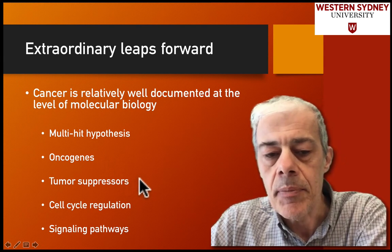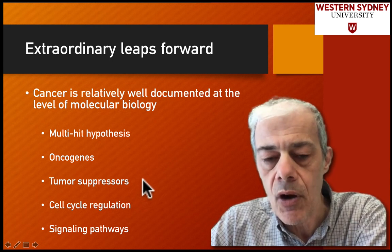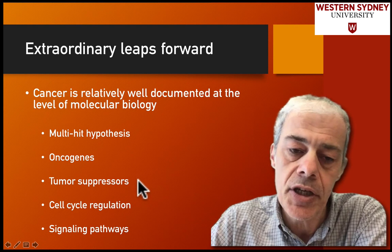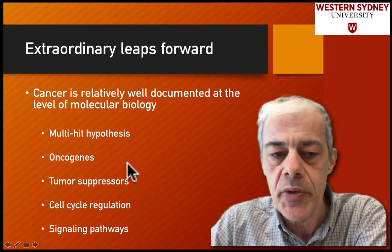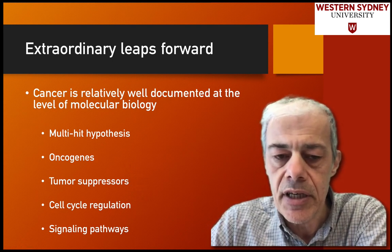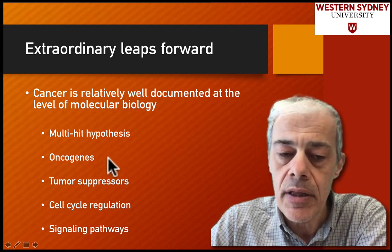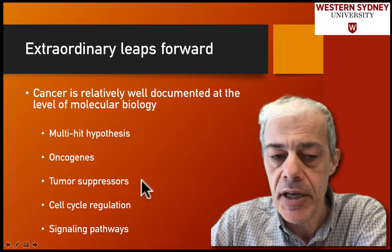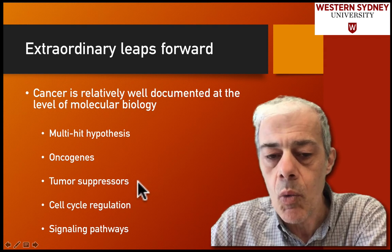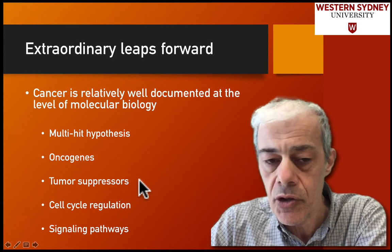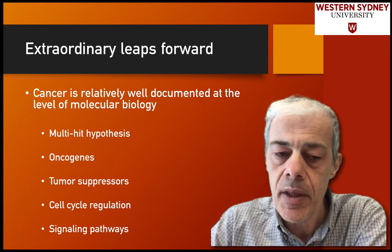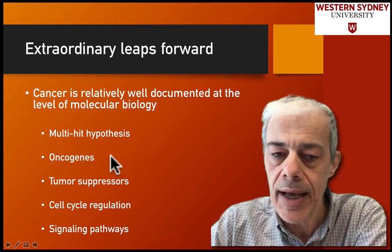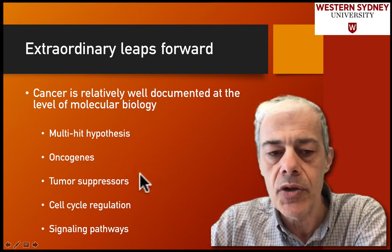With tumor suppressors, because it's a loss of function, you need to lose both copies of the gene — knocking out both alleles. We talked about this process of loss of heterozygosity in a previous lecture. There's a clear genetic distinction: for oncogenes, a mutation in one allele can lead to a cancer phenotype. For tumor suppressor genes, you need to knock out both copies before seeing the phenotype, because one good tumor suppressor can still suppress growth, whereas one hyperactive oncogene allele dominates over the normal allele.